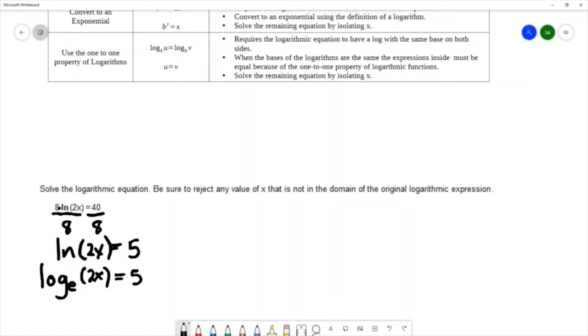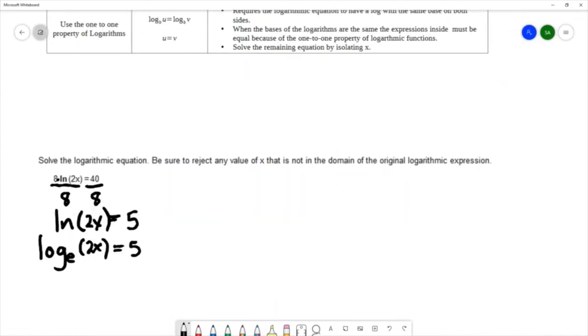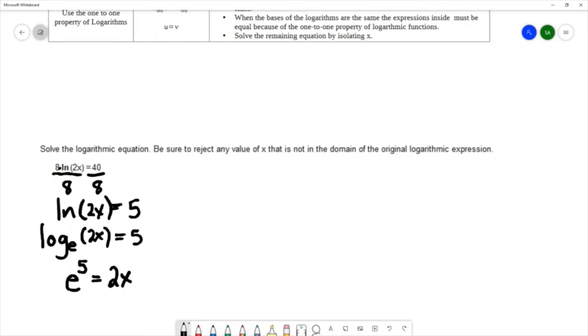So using the definition of a logarithm, we'll rewrite this as an exponential. The base of the log is the base of the exponent. The log always equals the exponent, so 5 will be the power. And then this expression equals the expression inside the log, which is 2x.